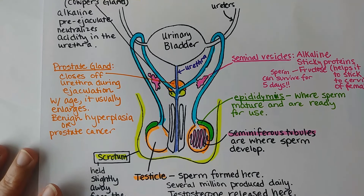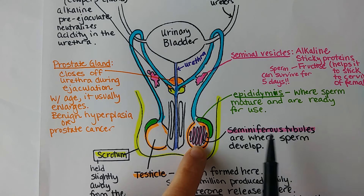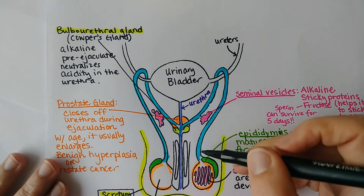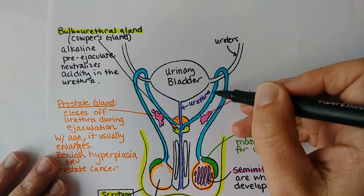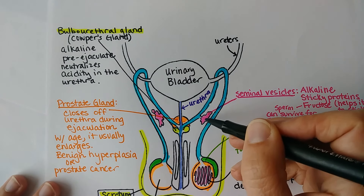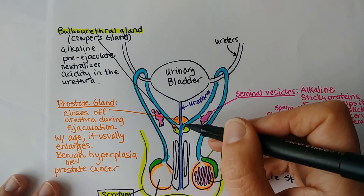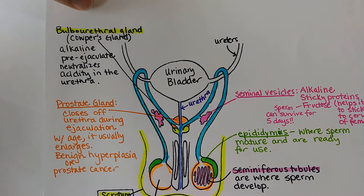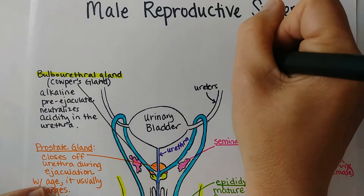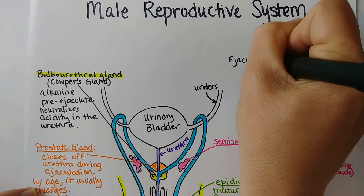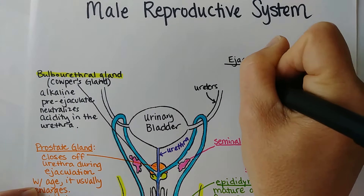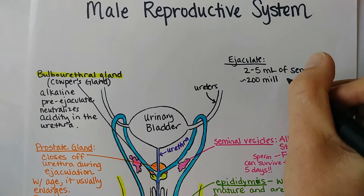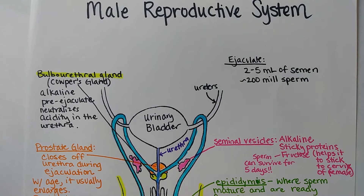To summarize: the testes make the sperm, which are formed in the seminiferous tubules and mature in the epididymis. During arousal, sperm move up the vas deferens over the top of the ureter. When ejaculation occurs, they collect fluid from the seminal vesicles, prostate gland, and bulbourethral gland. The ejaculate is about two to five milliliters of semen, and a healthy ejaculate contains somewhere between 40 million and 200 million sperm.